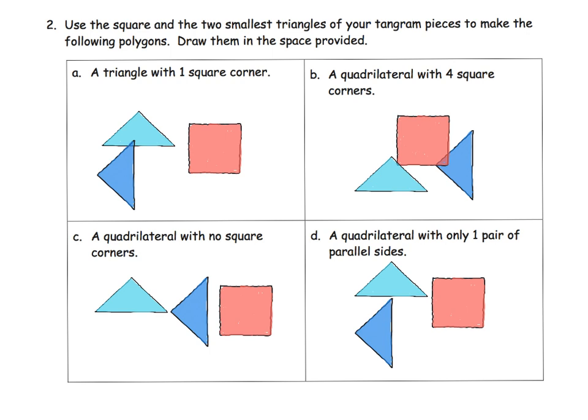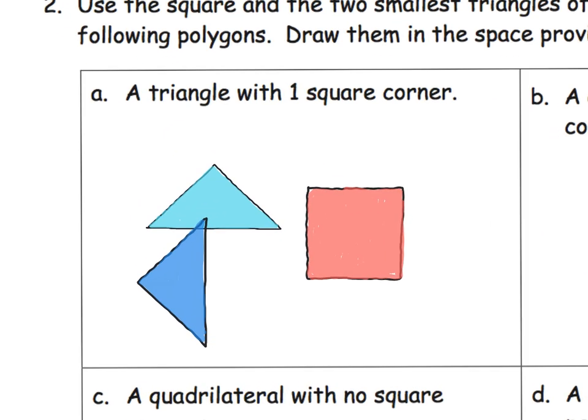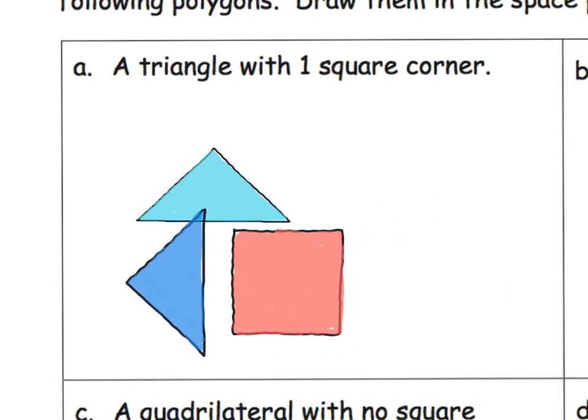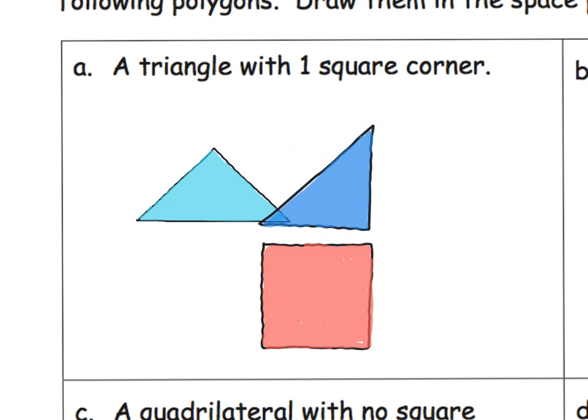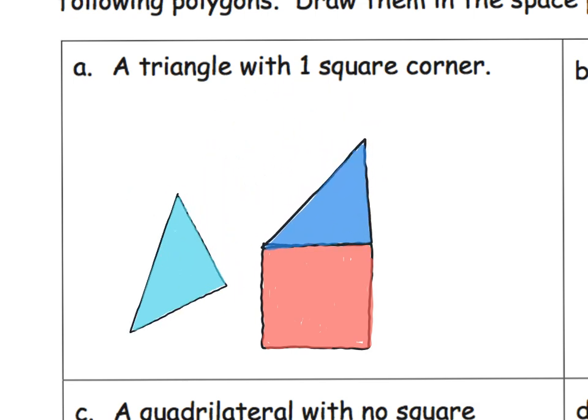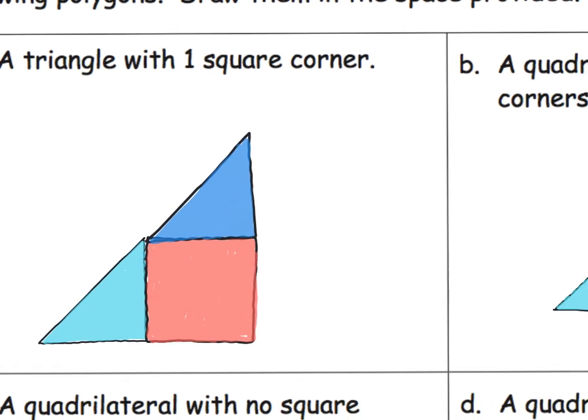So this is really fun. This is where the problem-solving aspect of mathematics comes in. It says, use the square and the two smallest triangles of your tangram pieces to make the following polygons. So it says, to build a triangle with one square corner. All right. So we're going to take these shapes and move them around and rotate them and do whatever we need to do to create a triangle with one square corner. This is where you just let your kids play and have fun. It looks like I'm going to get it right on my first try. But, you know, second graders aren't going to get it on their first try. And you can see here's my triangle with a square corner right there. There might be other ways to get this answer, but I just found one way.